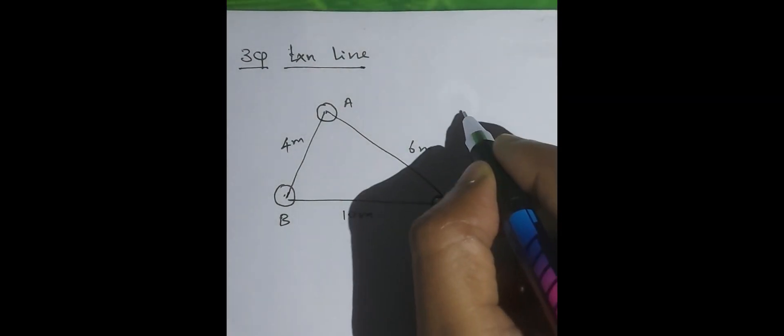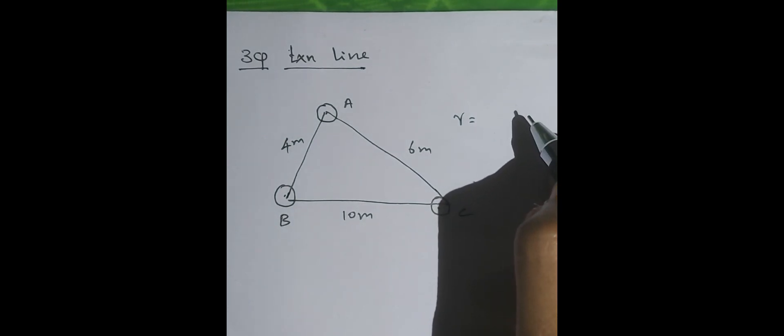In this problem, it is a three-phase transmission line and the three conductors are at corners of a triangle. Let us label them as A, B, and C conductors. The sides of the triangle are: A to B is 4 meter, B to C is 10 meter, and A to C is 6 meter. The given data: radius R is equal to 1.81 centimeter, given directly.